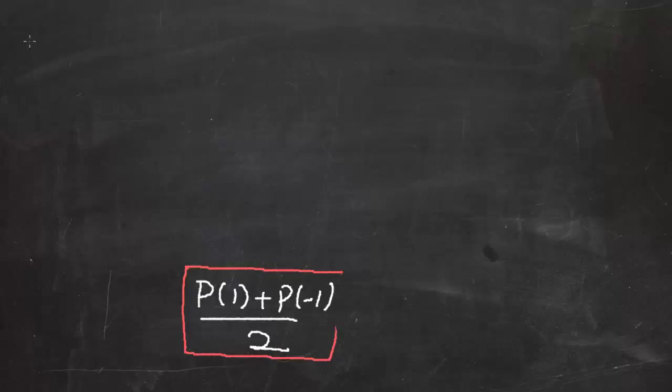Peki bir polinomun katsayıları toplamı neydi? P(1)'di değil mi? Eğer çift dereceli terimlerin katsayılarının toplamını çıkarırsak bu ifadeden, o zaman ne elde ederiz? Tek dereceli terimlerin katsayılarının toplamını elde ederiz.